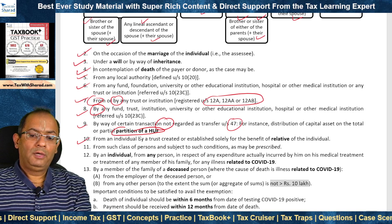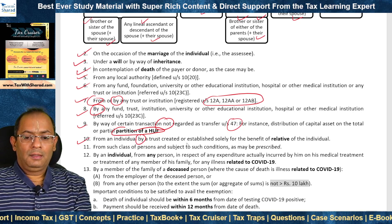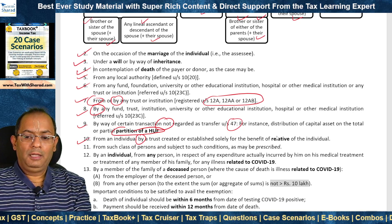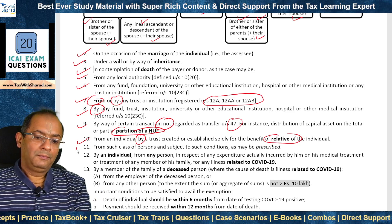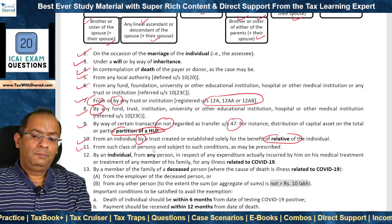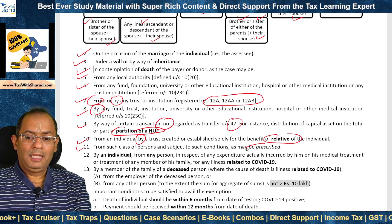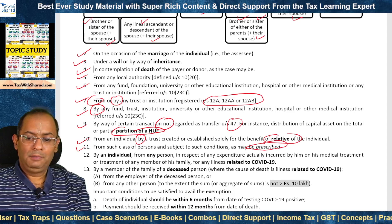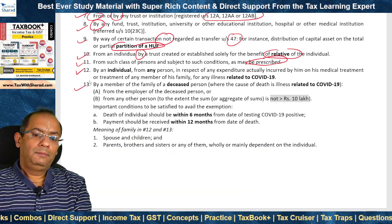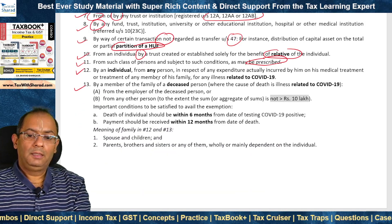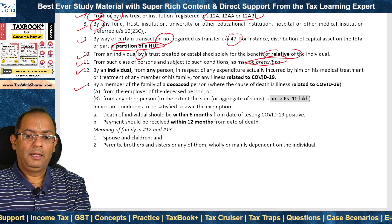From an individual by a trust created or established solely for the benefit of relatives of the individual. From persons subject to such conditions as may be prescribed — nothing has been prescribed so far. Serial numbers 12 and 13 deal with situations relating to COVID-19.